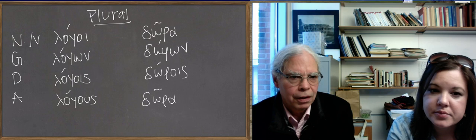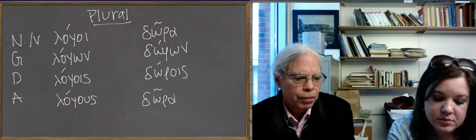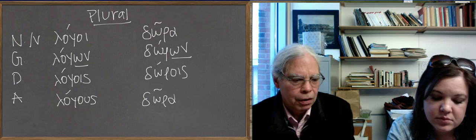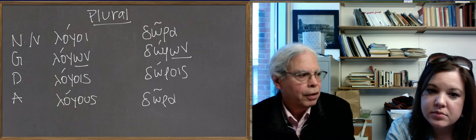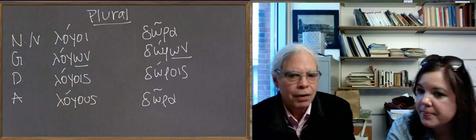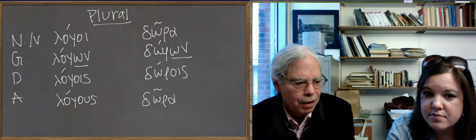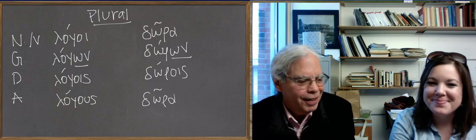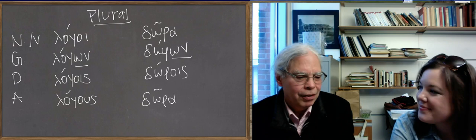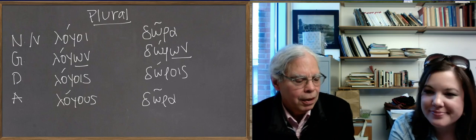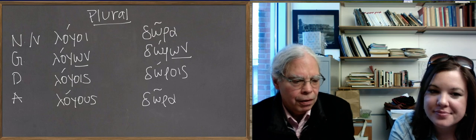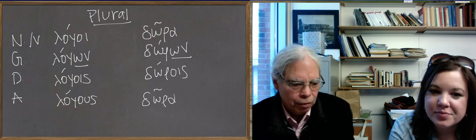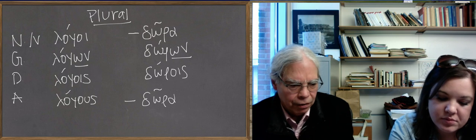You may notice that the genitive plural ending is on, again, for both logos and doron. The genitive plural ending on is true of all the declensions in Greek. When we get to the third declension, it's also on. So learning that ending will work for you. Every single Greek noun that's in on is a genitive plural, no matter what class it belongs to. But notice also that the nominative and accusative plural of doron end in a short alpha.